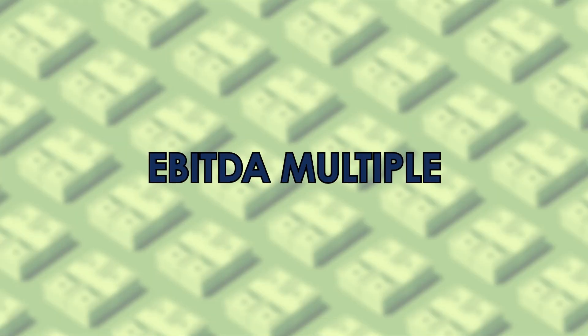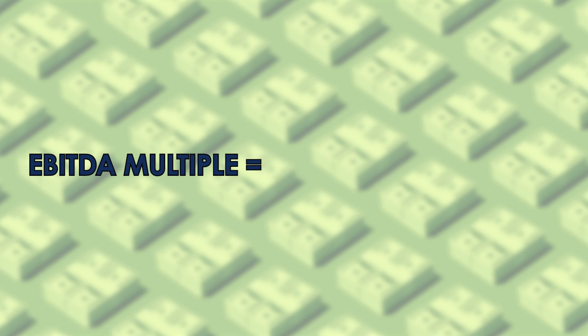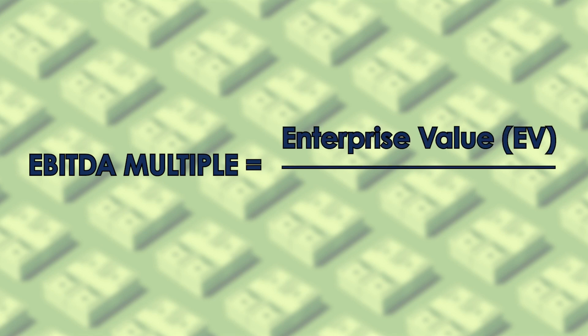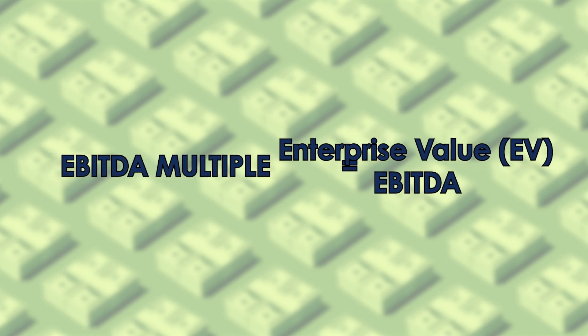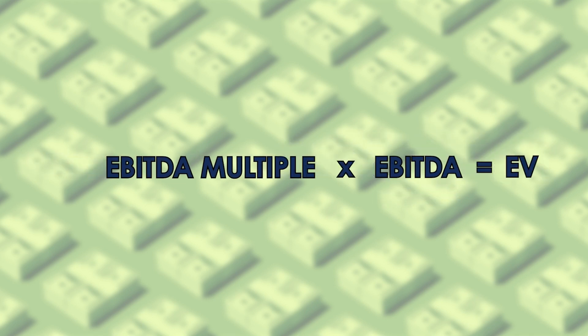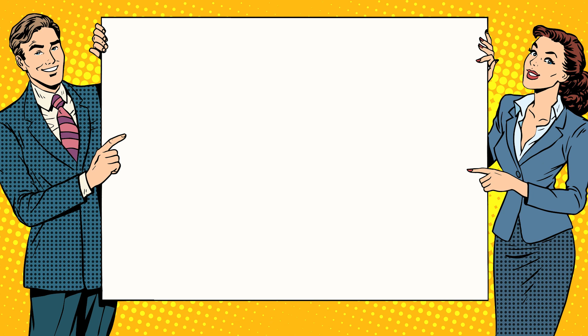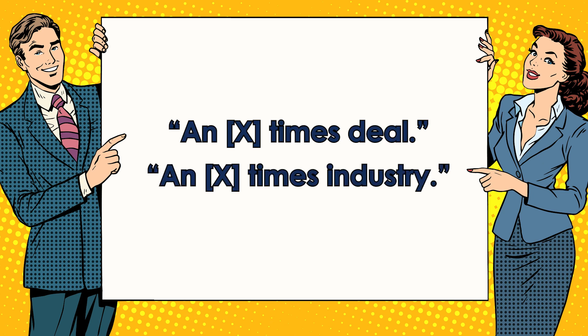So what is an EBITDA multiple? An EBITDA multiple is, very simply, a company's enterprise value divided by its EBITDA. Conversely, enterprise value can be calculated by multiplying EBITDA by the EBITDA multiple. This metric has long been used as a shorthand approach to a company's valuation, and you will frequently hear individual deals or entire industries referred to as an X times deal or an X times industry, with X being a multiple of EBITDA.